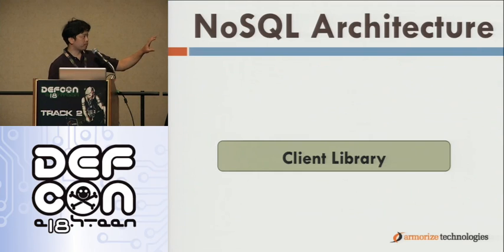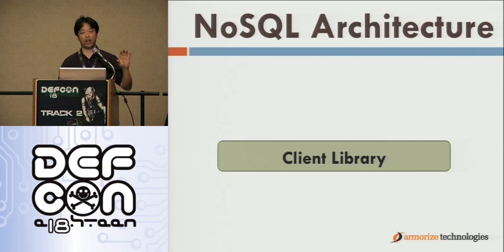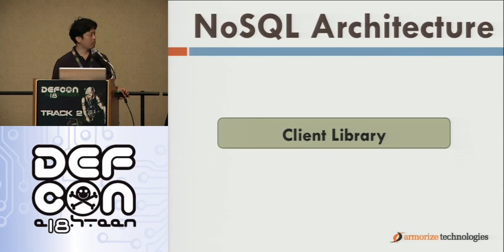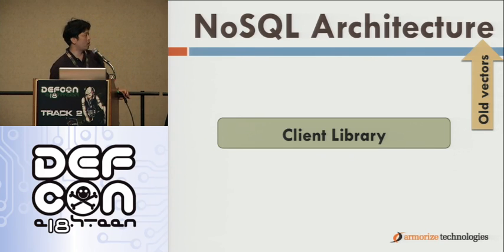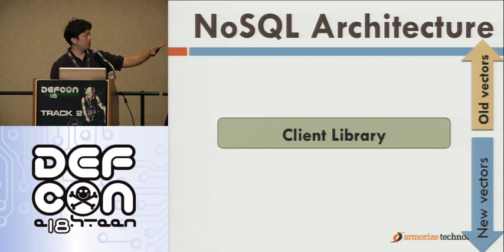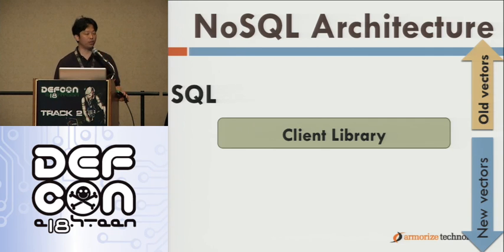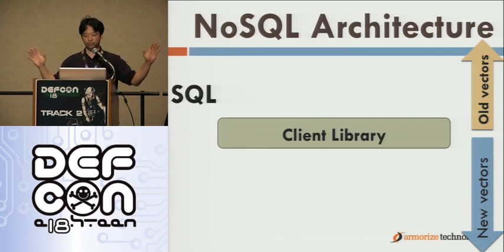How a client library is implemented will affect what types of vulnerabilities would exist in that particular implementation. Let's look at the old attack vectors versus the new vectors. In the old days, there was only one horizontal vector — SQL. And within that, we would have ODBC, JDBC, ADO, PDO, and so on for attackers to do SQL injections.